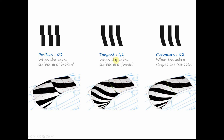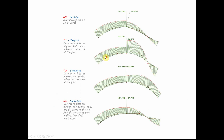G1 tangent continuity — the zebra stripes are lining up with each other, but they have a G0 look to them when they do hit each other. Same way down here. And then finally with G2, the zebra stripes are lining up and they're smoothly blending together, so you're getting better reflections with G2 continuity.